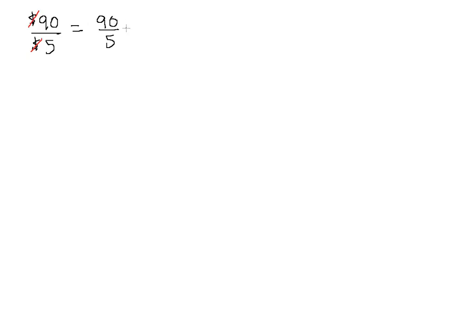And all we do is simplify this fraction. 90 over 5, if we factor out a 5 out of the top and the bottom, we get 18 over 1. So the ratio of $90 to $5 is 18 to 1 is how this is read. We can also write it as 18 colon 1. Both of these answers are the same thing. Both forms are correct.